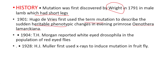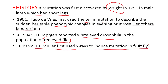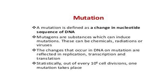In 1904, T.H. Morgan reported white-eyed Drosophila in a population of red-eyed flies. Red-eyed flies are the wild-type flies. In 1928, H.J. Muller first used X-rays to induce mutation in fruit flies.